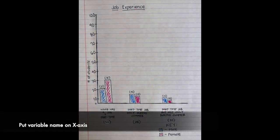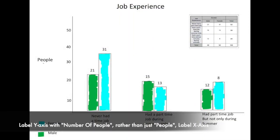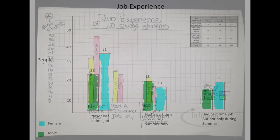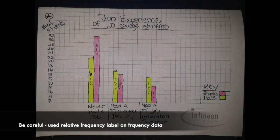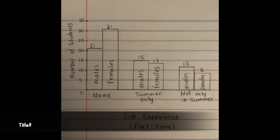This next one, I just need to see that variable name along the X axis — job experience. This next person, I would look at your Y axis: you want to write 'number of people' rather than just 'people.' And for this bar chart, the person used the percentage symbol — be careful, that's a relative frequency symbol when you had frequency data.